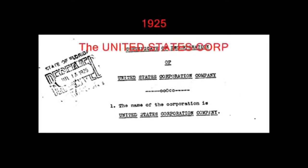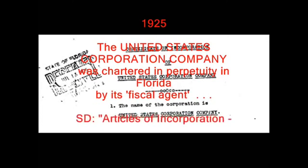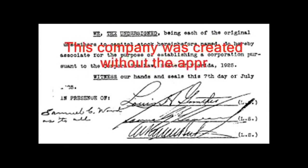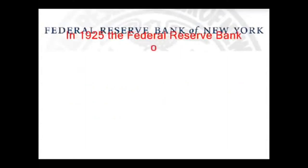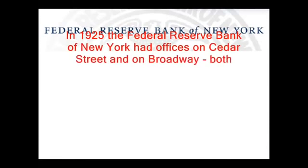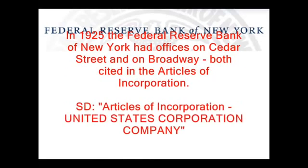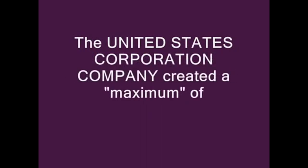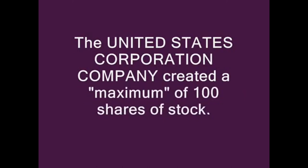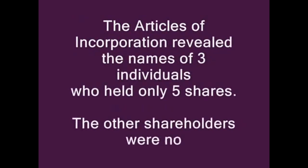1925: The United States Corporation Company was chartered in perpetuity in Florida by its fiscal agent. Source document: Articles of Incorporation, United States Corporation Company. This company was created without the approval of Congress nor the knowledge and authority of the American people. Note: in 1925, the Federal Reserve Bank of New York had offices on Cedar Street and on Broadway, both cited in the Articles of Incorporation. The Articles of Incorporation revealed the names of three individuals who held only five shares. The other shareholders were not identified.